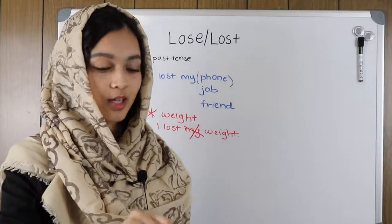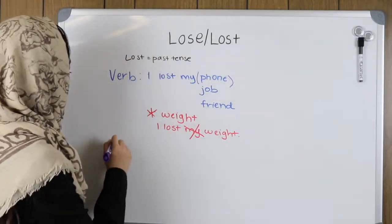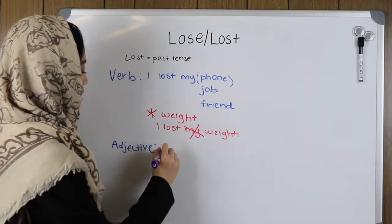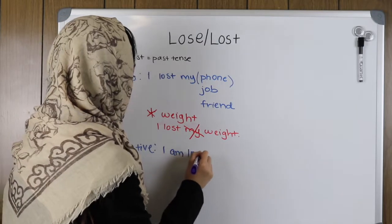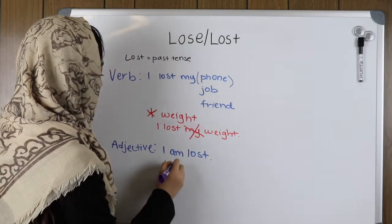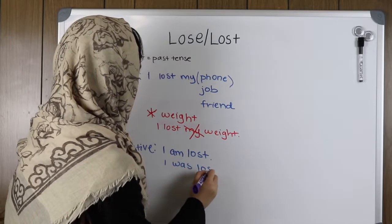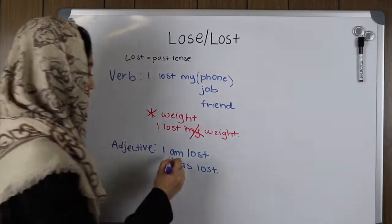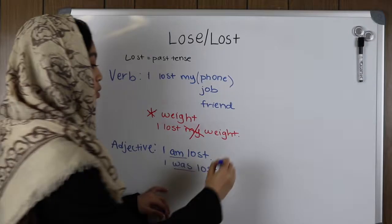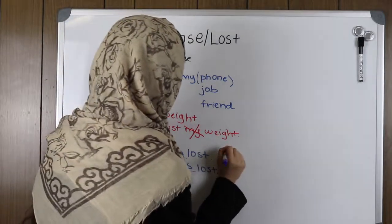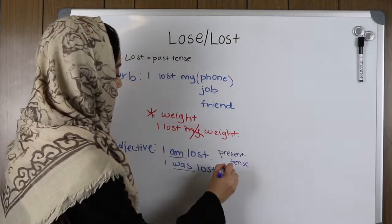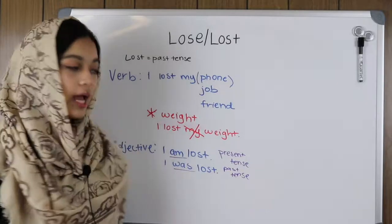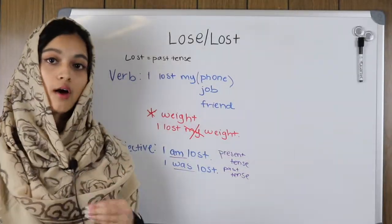When using 'lost' as an adjective, you can say 'I am lost' or 'I was lost.' The difference is: 'am' is present tense and 'was' is past tense. So 'I am lost' means you are lost right now, and 'I was lost' means you were lost before — you're describing yourself as an adjective.